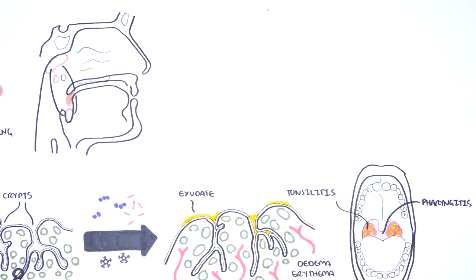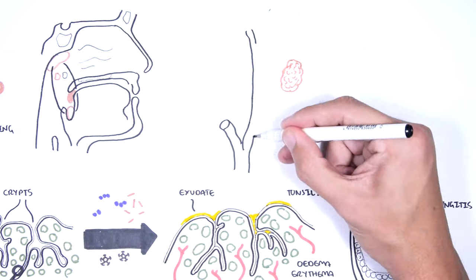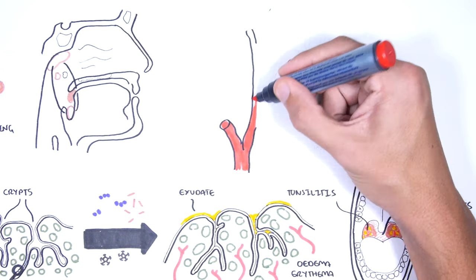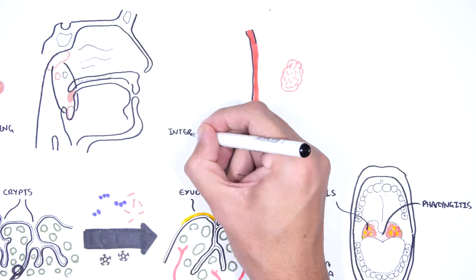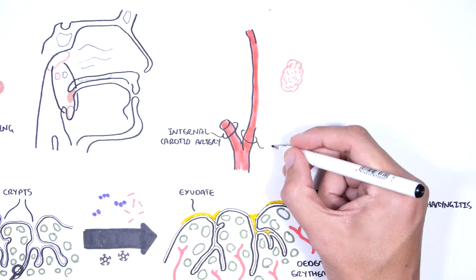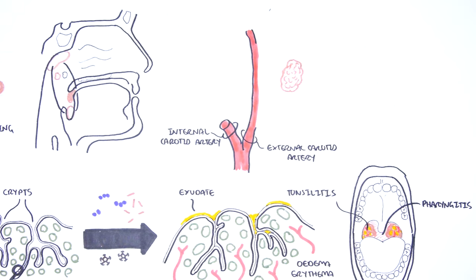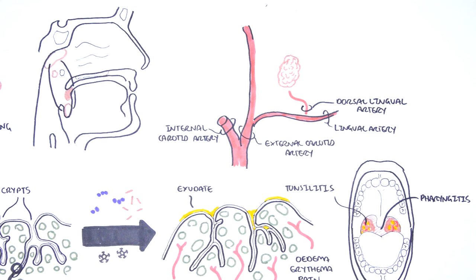The palatine tonsils have a rich blood supply. The palatine tonsils are supplied by the branches of the external carotid artery. You have the anterior tonsillar artery, basically the dorsal lingual artery via the lingual artery. The inferior tonsillar artery via the facial artery.